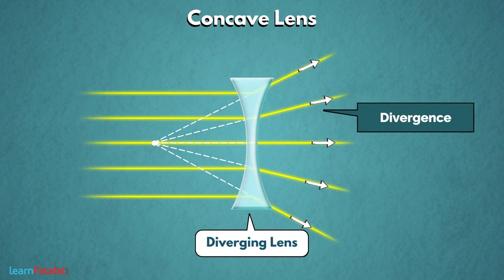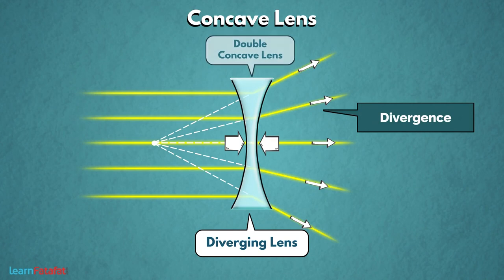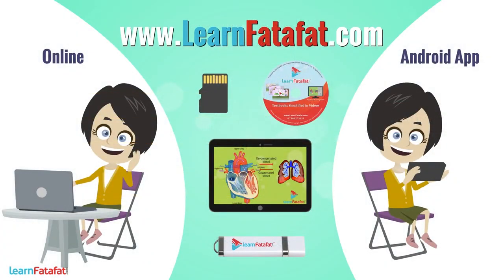इसी के साथ इसके two surfaces curve होते हैं inverse यानी अंदर की तरफ. इसी कारण से इस lens को double concave lens भी कहा जाता है. Here we complete this topic. For more such videos visit learnwhatever.com.